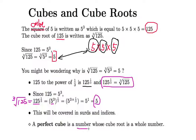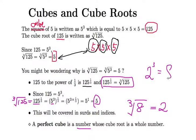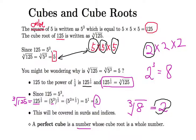A perfect cube is a number whose cube root is a whole number. For example, cube root of 8 is 2, because 2³ = 2 × 2 × 2 = 8 — we have three groups of 2, and we pick one. Cube root of 9 is not a whole number, so 9 is not a perfect cube. But 125 and 27 are perfect cubes, because 3³ = 27.